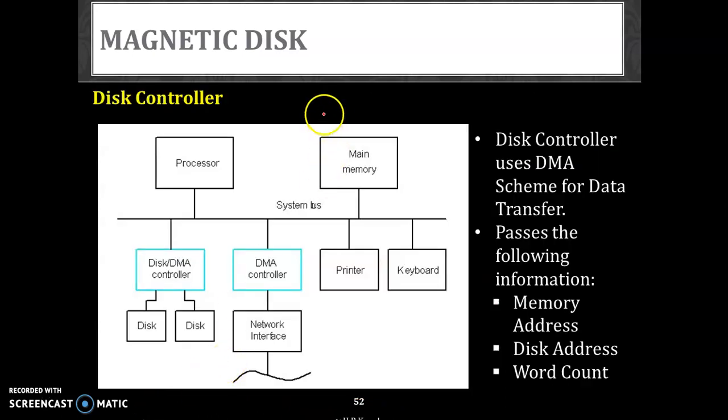So a disk controller - this magnetic disk controller, any disk controller, we have got a controller just like a DMA controller. Direct memory access. We have learnt about this in a very early video. This controller uses the exact scheme of DMA for the data transfer. It will also keep the information, pass on the information like memory address, disk address, and then the word count - how much amount of data to be transferred. It will share those information before giving any transfer, maybe from the disk to the processor or to the bus, or from the bus to the disk.